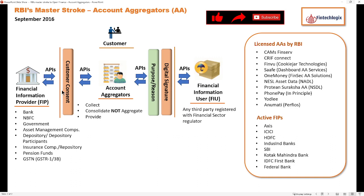As the concept says, your information is shared between your financial information source and the financial information users. In standardized form, financial information sources are called Financial Information Providers, or FIPs — this is standard terminology given by RBI — and financial information users are called FIUs.